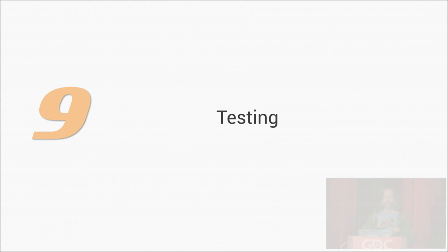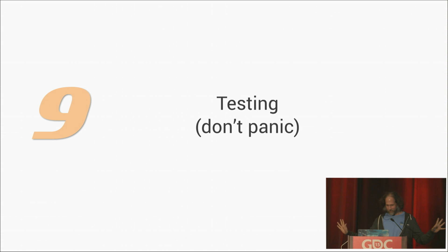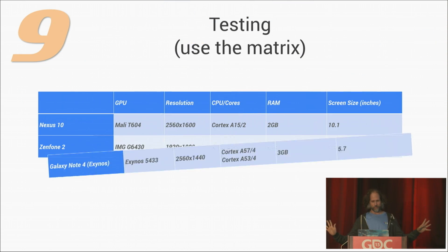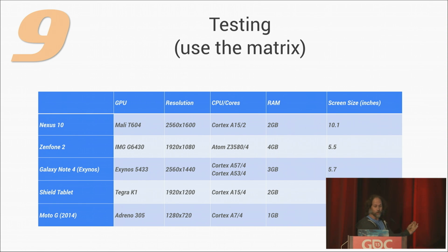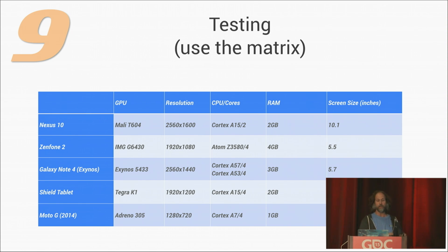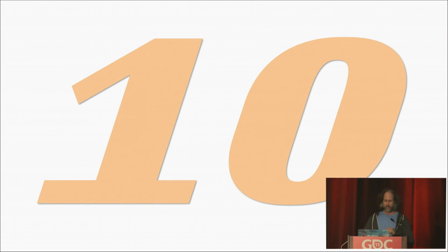Nine: testing. Don't panic — use the Matrix. With a matrix of just five devices, we've tested three screen size buckets, five resolutions, four memory configurations, five GPUs, and five CPUs from five different manufacturers. It's not that hard.